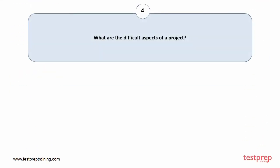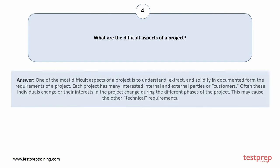Question number 4: What are the difficult aspects of a project? Your answer is: One of the most difficult aspects of a project is to understand, extract, and solidify in documented form the requirements of a project. Each project has many interested internal and external parties or customers. Often these individuals change, or their interests in the project change during the different phases of the project, which may cause other technical requirements.